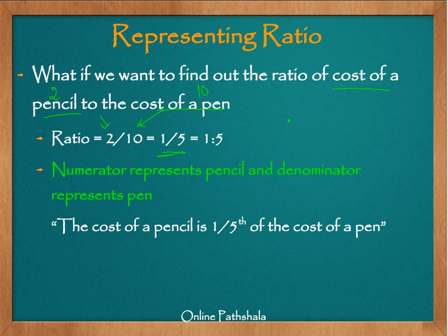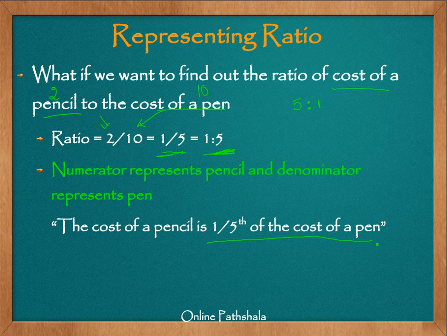The first ratio — the ratio of the pen to the pencil — was 5 is to 1. And now this ratio is 1 is to 5. It means that the cost of a pencil is one fifth of the cost of a pen, which is logical because we know that the cost of a pen is much higher than the cost of a pencil, as given by the numbers.